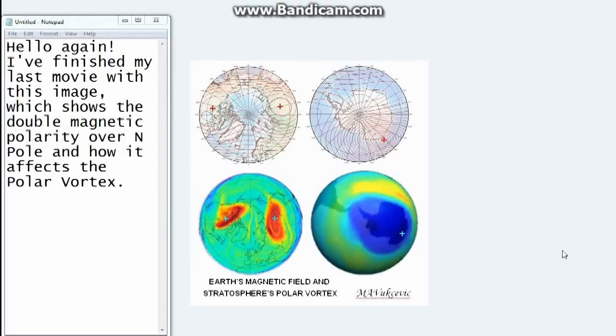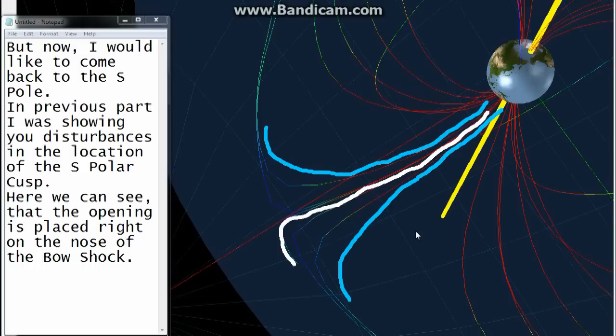Hello again! I finished my last movie with this image, which shows the double magnetic polarity over the northern pole and how it affects the polar vortex. But now I would like to come back to the southern pole. In previous parts, I was showing you disturbances in the location of the south polar cusp. Here we can see that the opening is placed right on the nose of the bow shock.